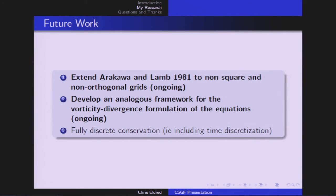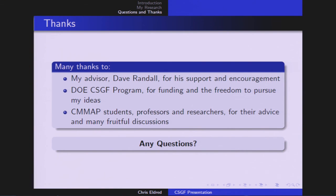That's all I've got for today. This is the future work that we're working on, obviously extending that Arakawa-Lamb scheme to non-square and non-orthogonal grids, and then developing an analogous framework for the vorticity divergence form of the equations. I've shown just the vector-invariant form, but it would be nice to extend this to other formulations of the equations. I'd like to thank my advisor, Dave Randall, for his support and encouragement. I'd especially like to thank the CSGF program for funding, for really giving me the freedom to pursue these ideas. I'd like to thank all my fellow CMAP students. Any questions?